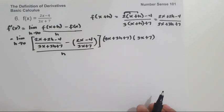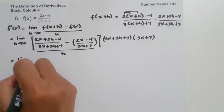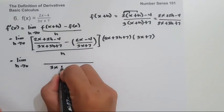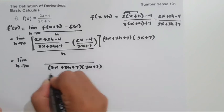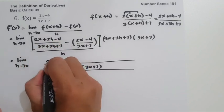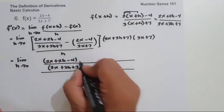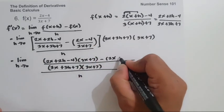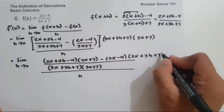So we write: limit as h approaches zero of [(2x plus 2h minus 4)(3x plus 7) minus (2x minus 4)(3x plus 3h plus 7)], all over h times (3x plus 3h plus 7)(3x plus 7).